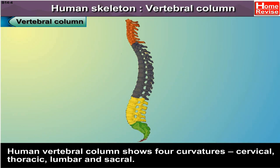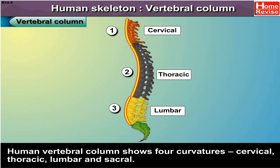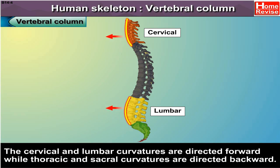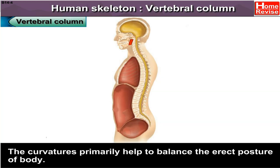The human vertebral column shows 4 curvatures: cervical, thoracic, lumbar, and sacral. The cervical and lumbar curvatures are directed forward, while the thoracic and sacral curvatures are directed backward. The curvatures primarily help to balance the erect posture of the body.